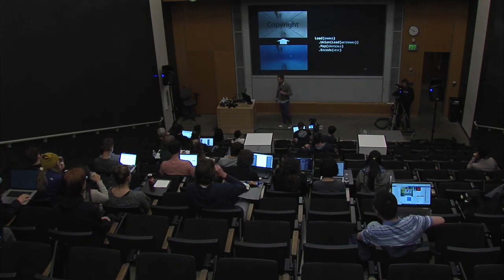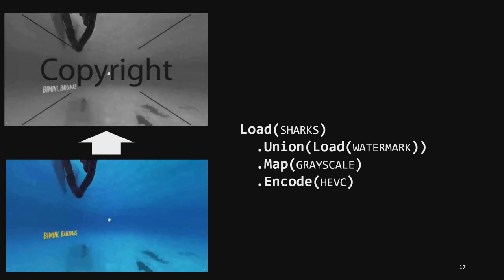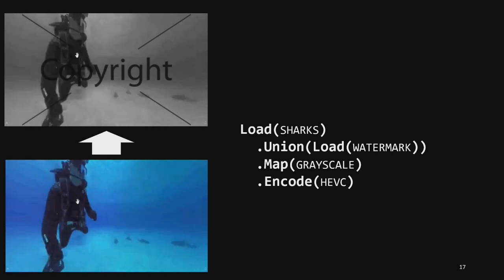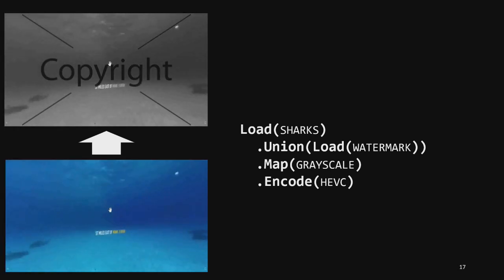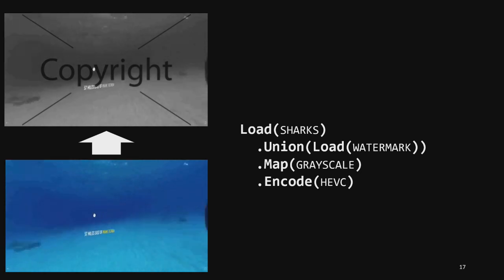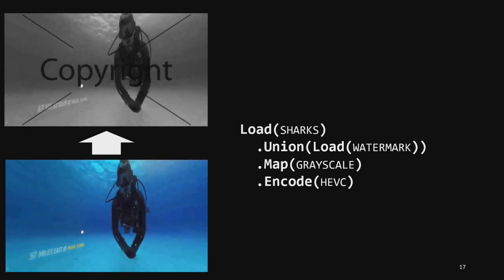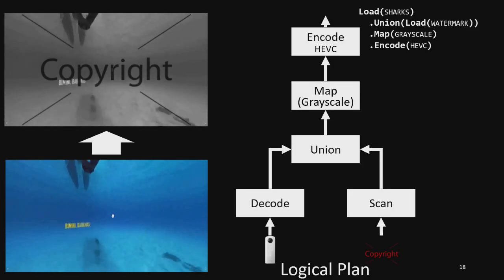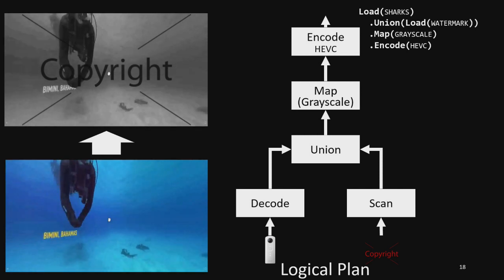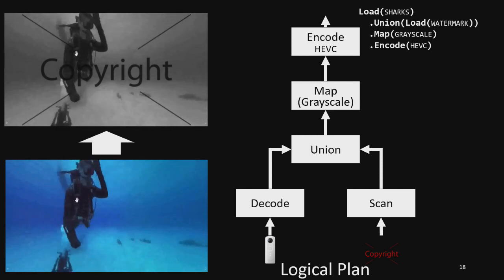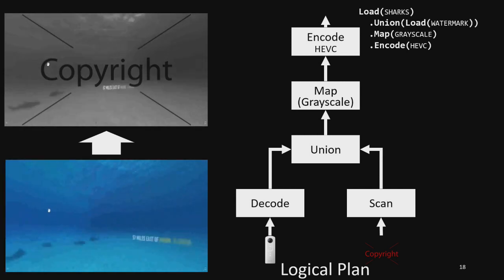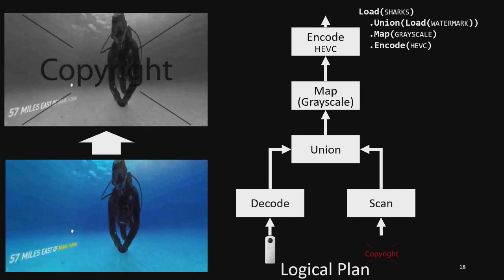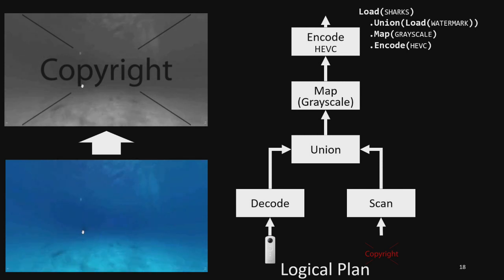How does LightDB perform that conversion? Here's a hello-world VR application: we take a 360 video, overlay a watermark, convert to grayscale, and write to disk. LightDB converts this into a logical execution plan drawn from a modest set of operators — there's a one-to-one correspondence between the declarative invocation and the logical plan. It decodes input videos, scans the watermark from disk, unions them together, transforms to grayscale, and encodes.